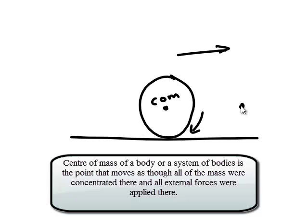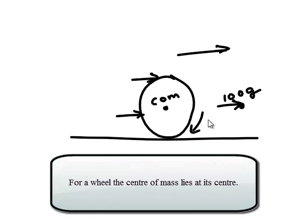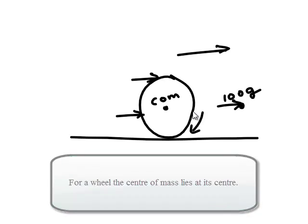I could consider the 100 grams placed at this one single point, and all the forces acting on the wheel to be acting at this point. But for a symmetrical object like a wheel, you can just take the center of the wheel as its center of mass.